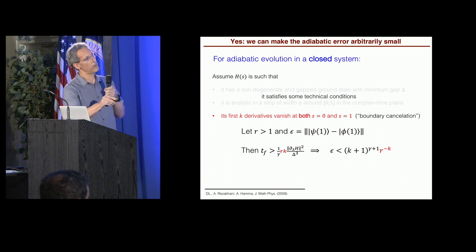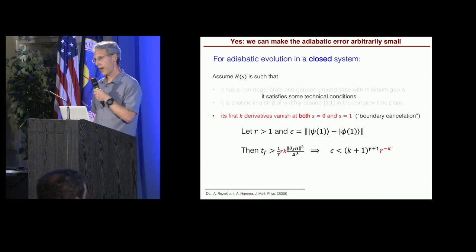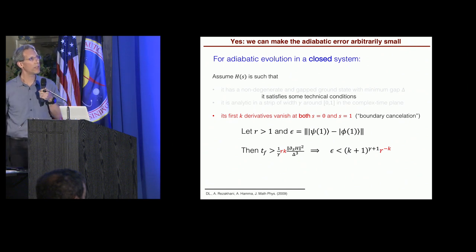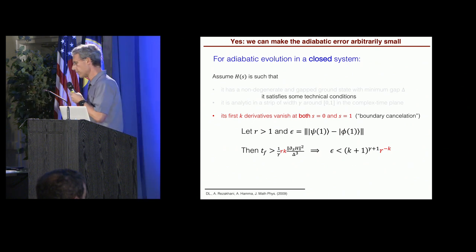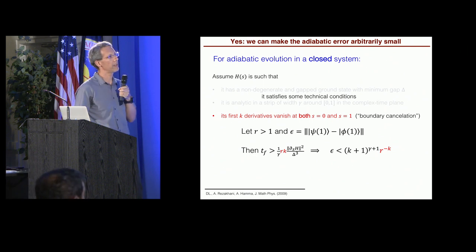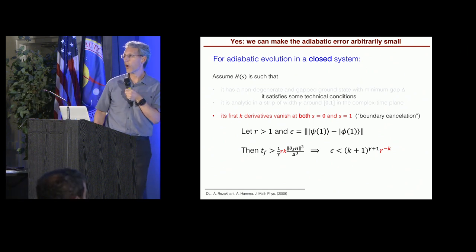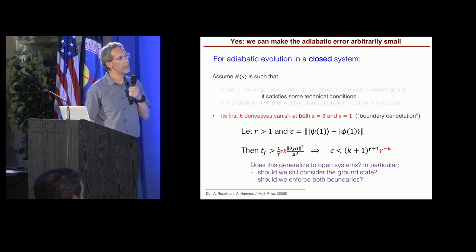If this condition is satisfied, then the error can be suppressed like r to the negative k. Okay? So you can make the error go down like a power of k. All right? So every additional zero derivative makes the error go down by another power. So that means we can make the error arbitrarily small, the adiabatic error, provided that the annealing, the evolution time satisfies this condition. So now I want to take this, and that's the new work, I want to take this out of the domain of closed systems to the domain of open systems. So how does it generalize?